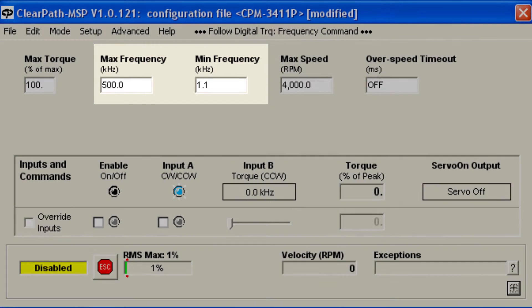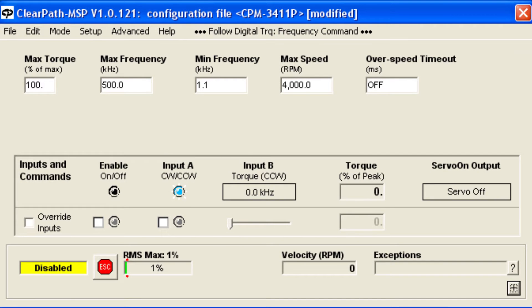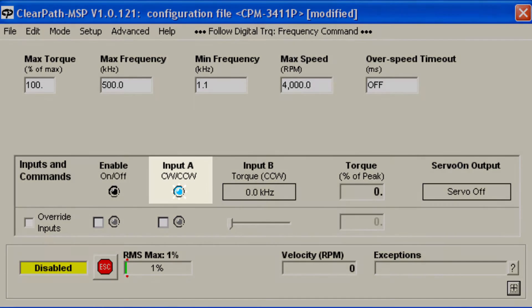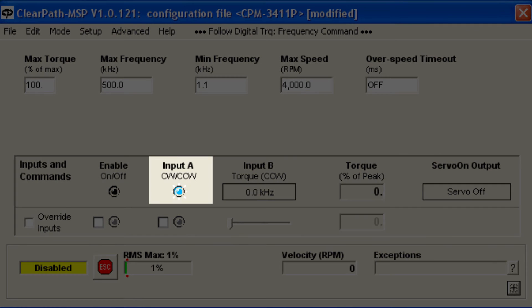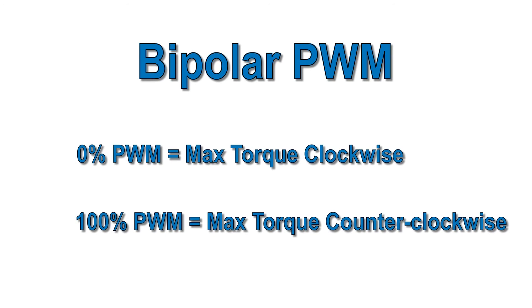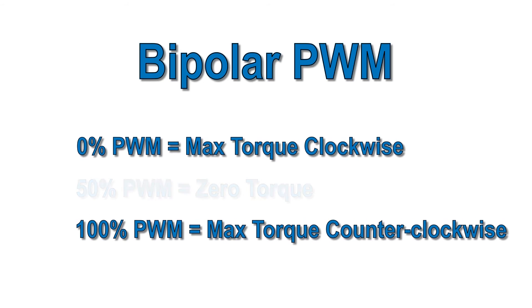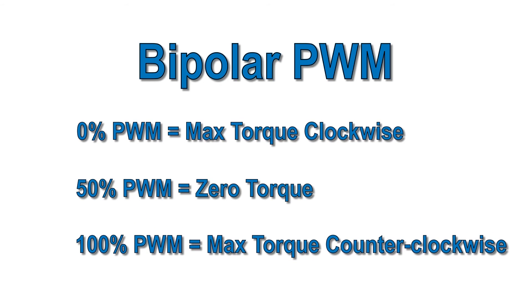In both modes, the direction of the applied torque is set by turning input A on or off. ClearPath also has a Bipolar PWM mode, where 0% PWM and 100% PWM correspond to max torque in opposite directions, and 50% means zero torque.